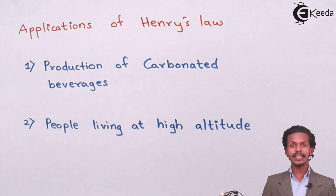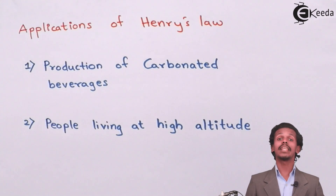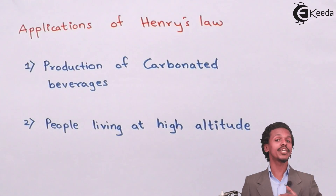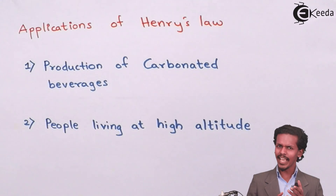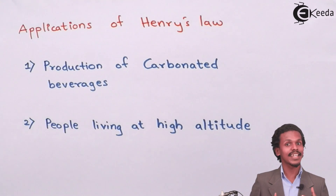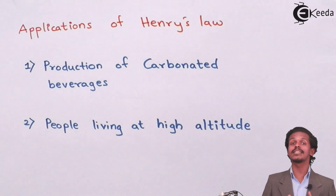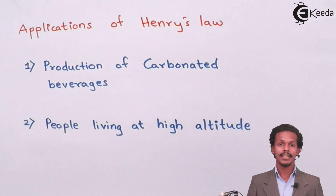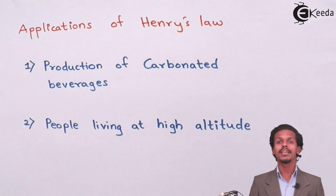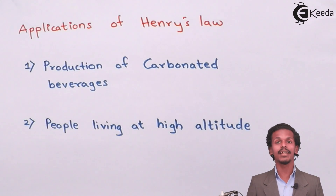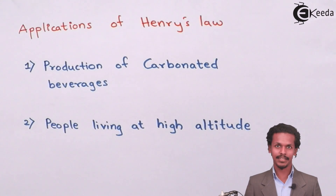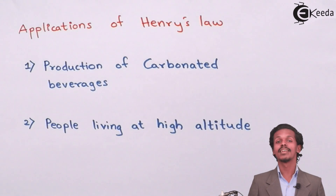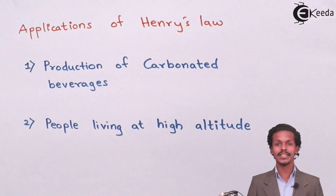The second application concerns people living at high altitude. At high altitude, there is a very small quantity of oxygen in the environment because the pressure is very low. According to Henry's Law, if pressure is less, less gas dissolves in liquid. So the oxygen available is very less, and people face various problems. This condition is known as anoxia, which means feelings of weakness, and blood circulation is also affected because hemoglobin absorbs less oxygen at high altitude.